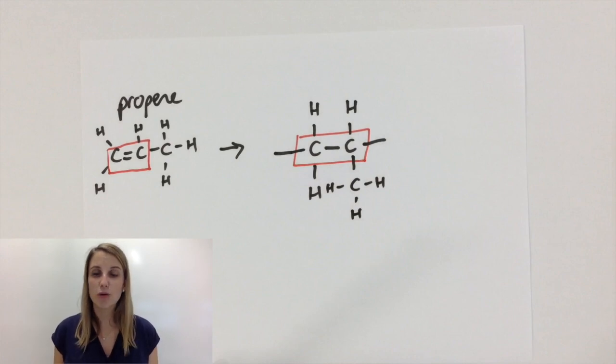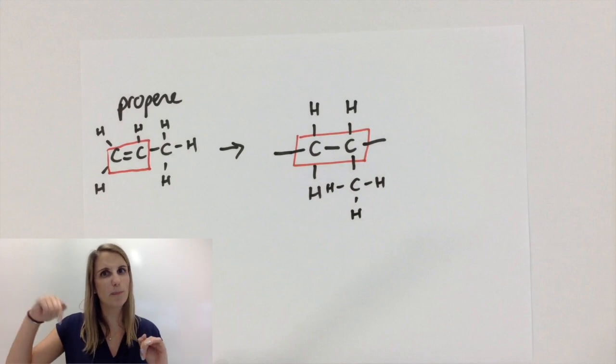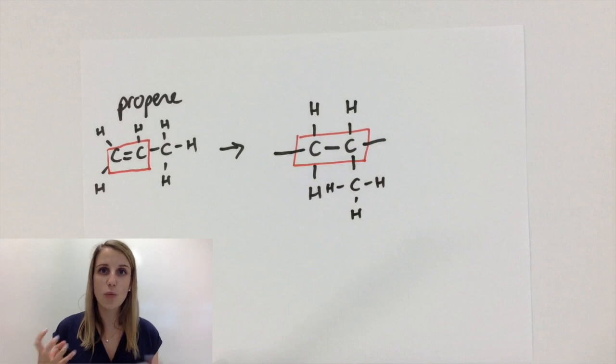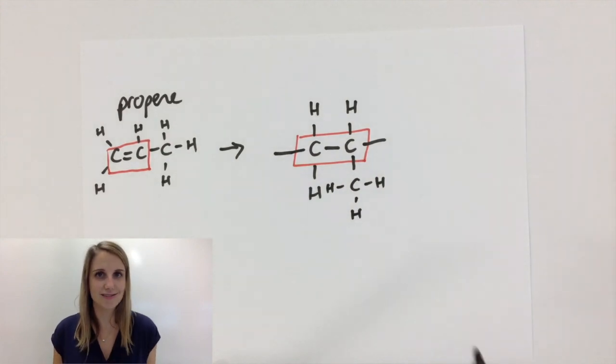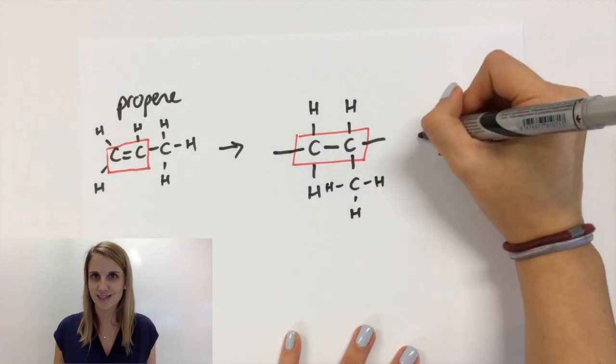So that CH3 group is not part of the polymer backbone. It's kind of a branch, it sticks out, because it's already full. There's no way that it can bond to anything else, and it's not going to lose one of its hydrogens magically.